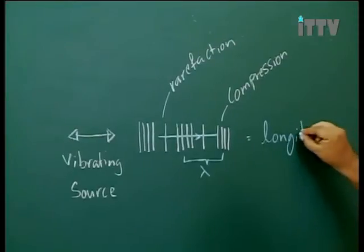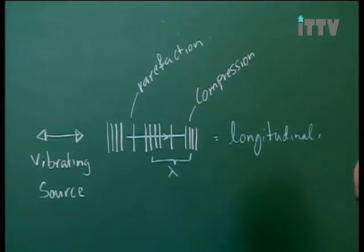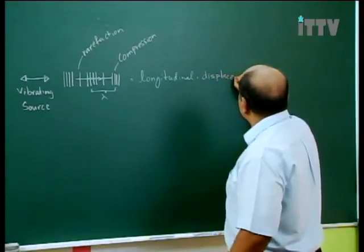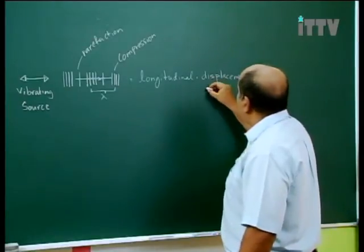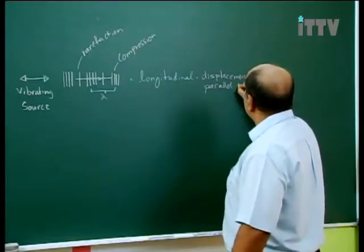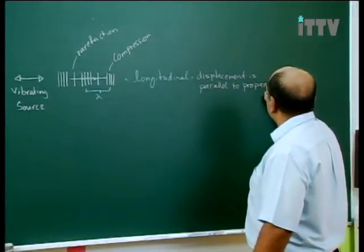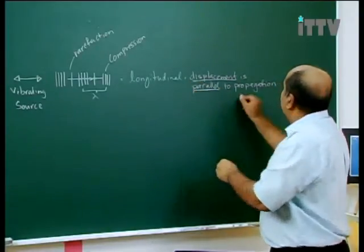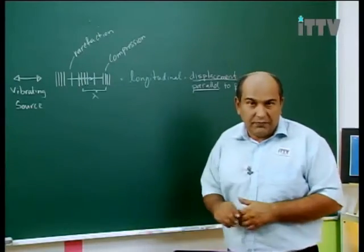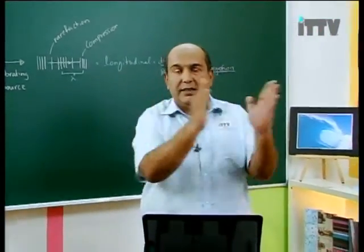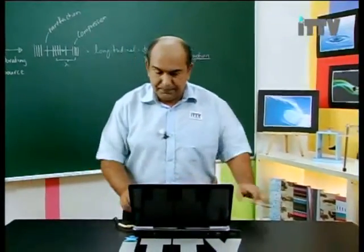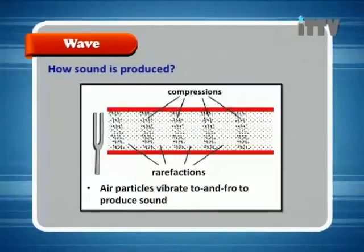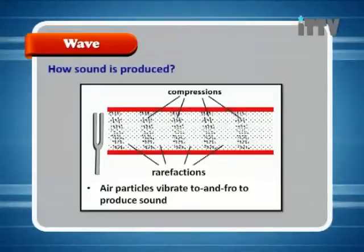In a longitudinal wave, the displacement is parallel to the direction of propagation. The particles move to and fro as the wave moves in a parallel direction. How sound is produced: air particles vibrate to and fro to produce sound, at the same time producing areas of compression and rarefaction.